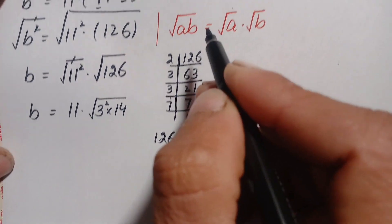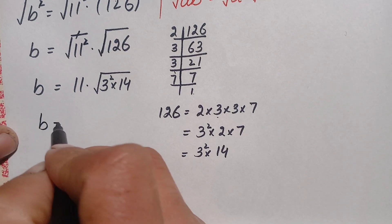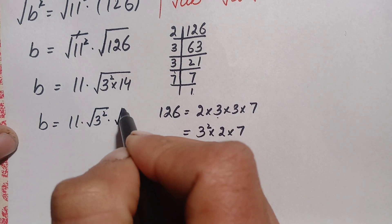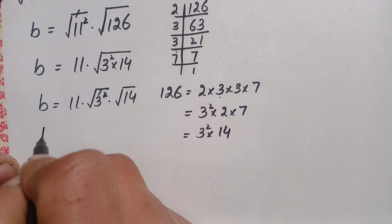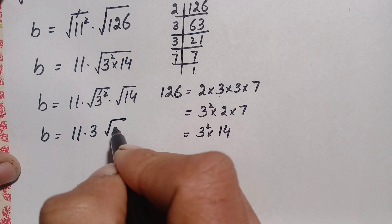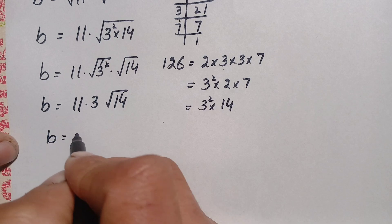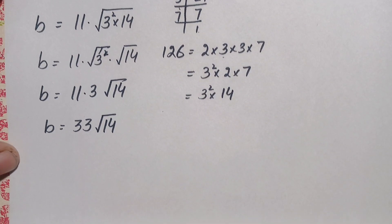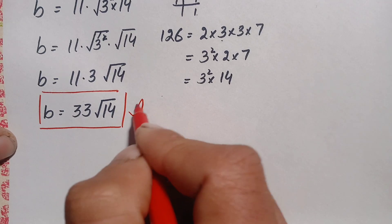Replacing 126 with 3² × 14 inside the square root: √126 = √(3² × 14) = √(3²) × √14 = 3√14. Therefore b = 11 × 3 × √14 = 33√14. So the final answer is b = 33√14.